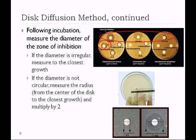Chlorine produces a very irregular zone, so you measure from the center of the disc to the closest growth to get the radius, then multiply by 2 for the diameter. The discs are 6 mm in diameter, so zone sizes will be larger than 6 mm. If growth goes all the way up to the disc with no zone, as with Escherichia coli and hexachlorophene or Pseudomonas with hexachlorophene, orthophenylphenol, and QUAT, this is recorded as NI, or no inhibition.